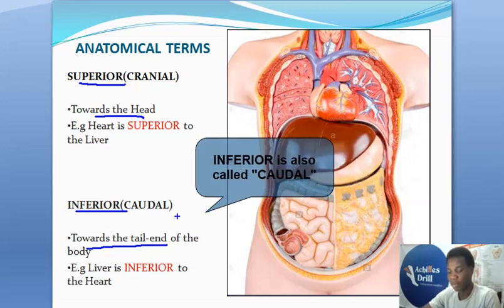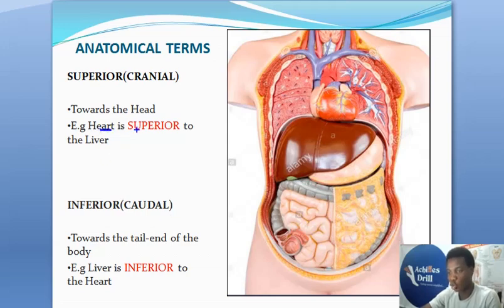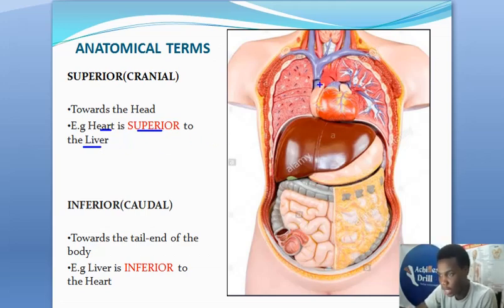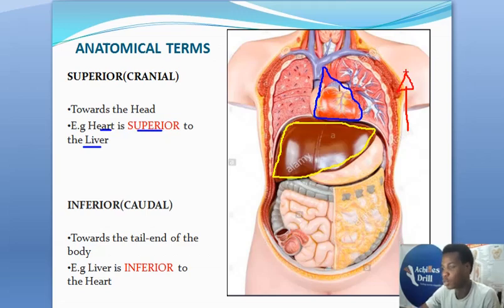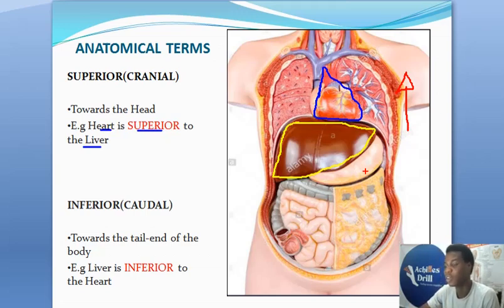Here is an important example: the heart is superior to the liver. Take a look at the picture — this structure is the heart and right here we have the liver. The heart is superior to the liver, meaning the heart is directed towards the head compared to the liver — it is closer to the head, it is cranial to the liver. So the heart is superior to the liver, while the liver is inferior to the heart, meaning the liver is located beneath the heart.